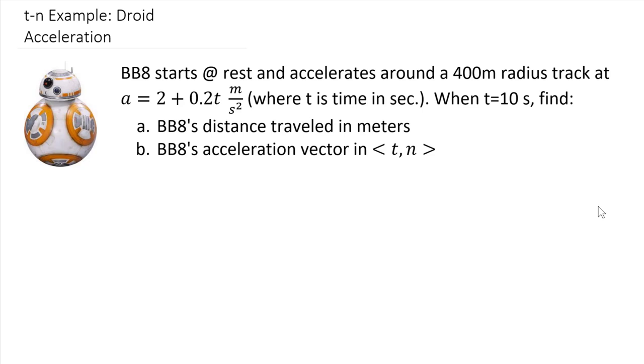We're going to take a look at the acceleration of BB-8 droid as he was racing around a 400-meter radius track and we're given an acceleration. Now this acceleration is around that track. The function is 2 plus 0.2t, that whole thing in meters per second squared, and t is time in seconds. And at 10 seconds, we want to find the following two items.